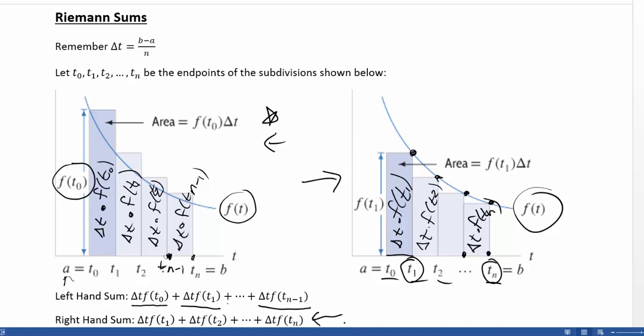So we have a way to write these terms generically. The difference between the two is where the subscript starts and ends. For the left-hand sum, we start at t sub zero because we use the leftmost point, whereas the right-hand sum starts at f of t sub one. On the other end, the left-hand sum ends with f of t sub n minus one because it doesn't use the rightmost point, whereas the right-hand sum ends with f of t sub n because it does use the rightmost point.